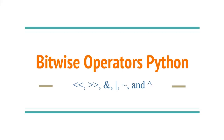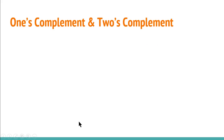As you can see on the screen, we have six bitwise operators. Before we jump into the operators and understand what each one does, we need to take a look at what ones complement and twos complement are. So let's start with that.